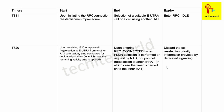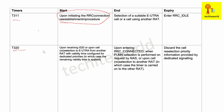T311 starts upon initiation of the RRC Connection Re-establishment procedure. It ends when the UE selects a suitable E-UTRA cell or a cell using another RAT. Upon expiry of T311, the UE enters RRC Idle state.